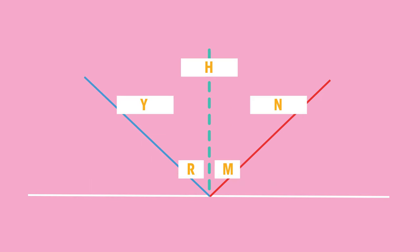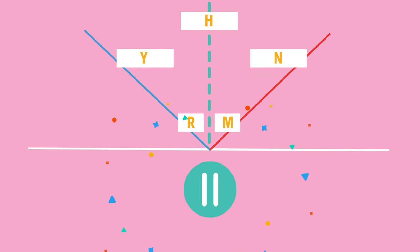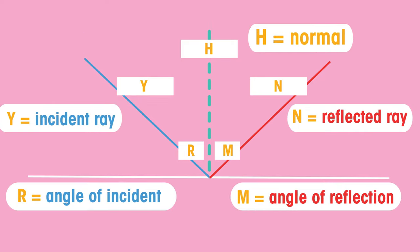Can you label the different parts of this reflection ray diagram? Pause the video and give it a go. Did you get them correct?